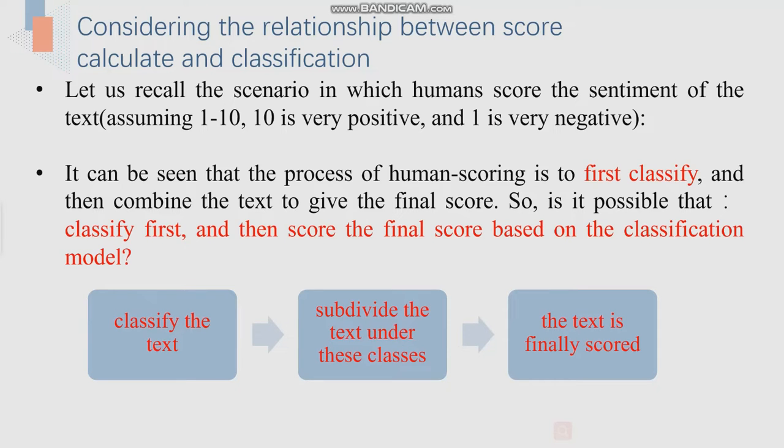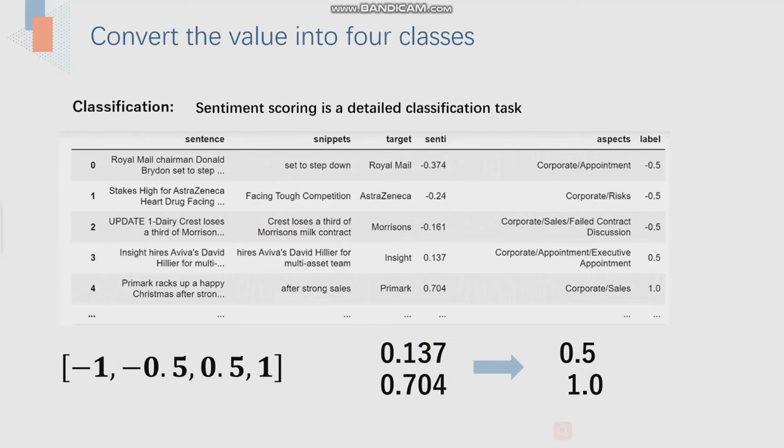After we have this idea, let us recall the scenario in which humans score the sentiment of text. Assuming 1 to 10 point, 10 is very positive and 1 is very negative. It can be seen that we will firstly classify the text, and then subdivide the text under this class. After comparing with this detailed text, we will have the final score. So, we can see we will first classify and then have the detailed score.